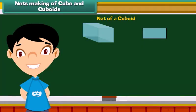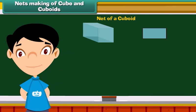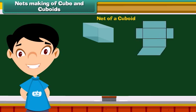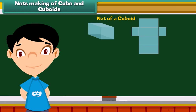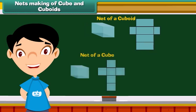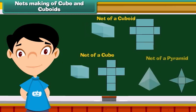A net of a 3D shape is an arrangement which, when folded along the common edges, forms the 3D object. Here are some nets for making cubes and cuboids.